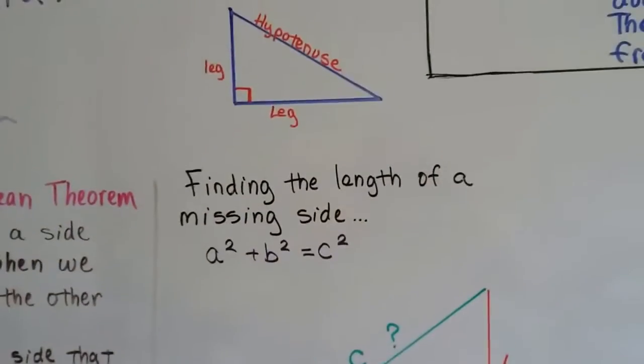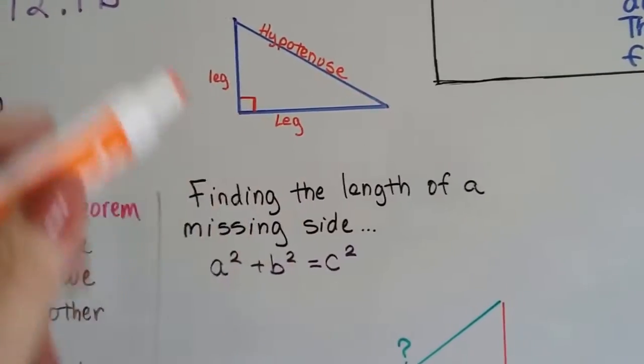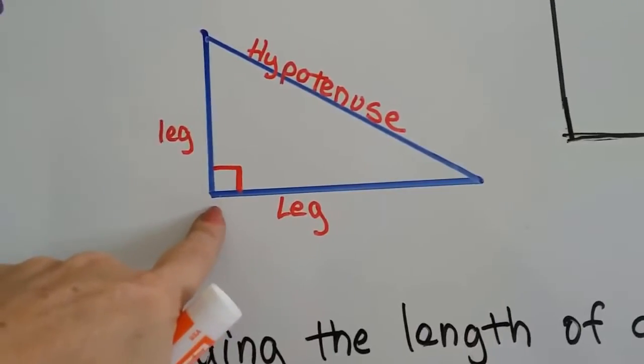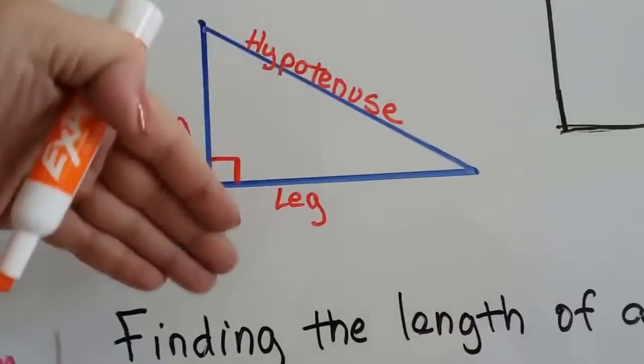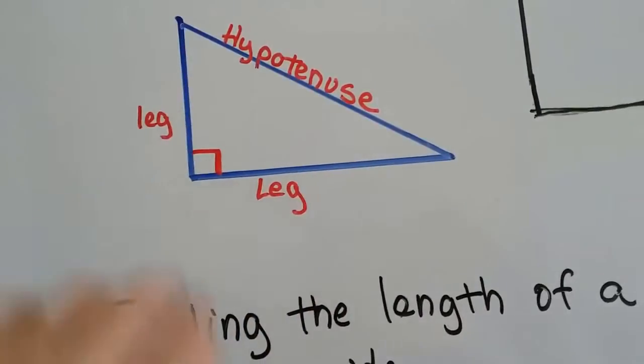Here we've got this right triangle with a leg here and a leg here, and the hypotenuse is right here. This is the right angle, and the hypotenuse is opposite of it. It's on the opposite side of the triangle.